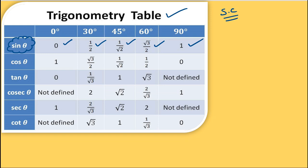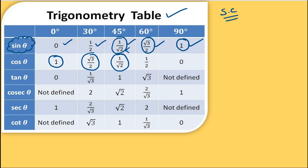For cos theta, it is the reverse of sin. Cos 0° = 1, cos 30° = √3/2, cos 45° = 1/√2 — same as sin 45° — cos 60° = 1/2, and cos 90° = 0.